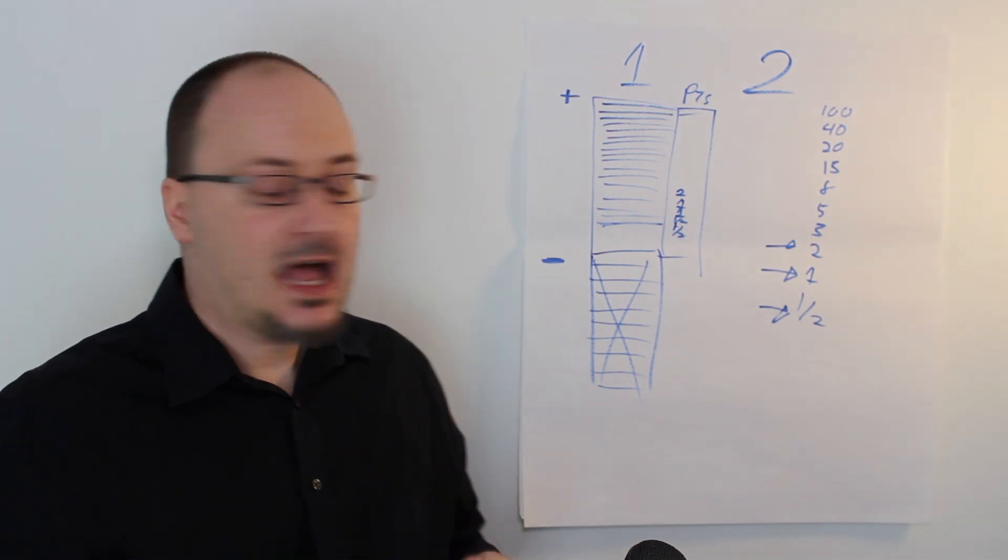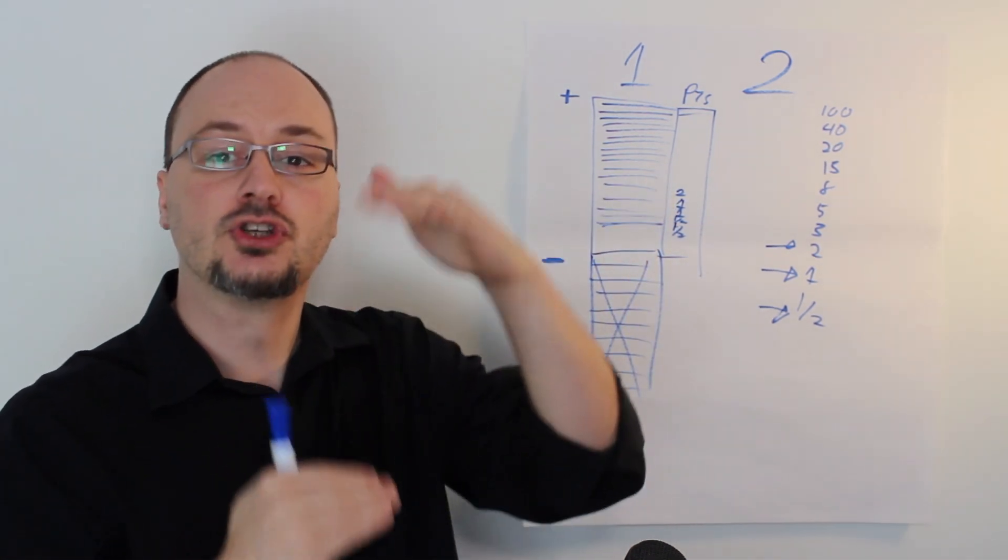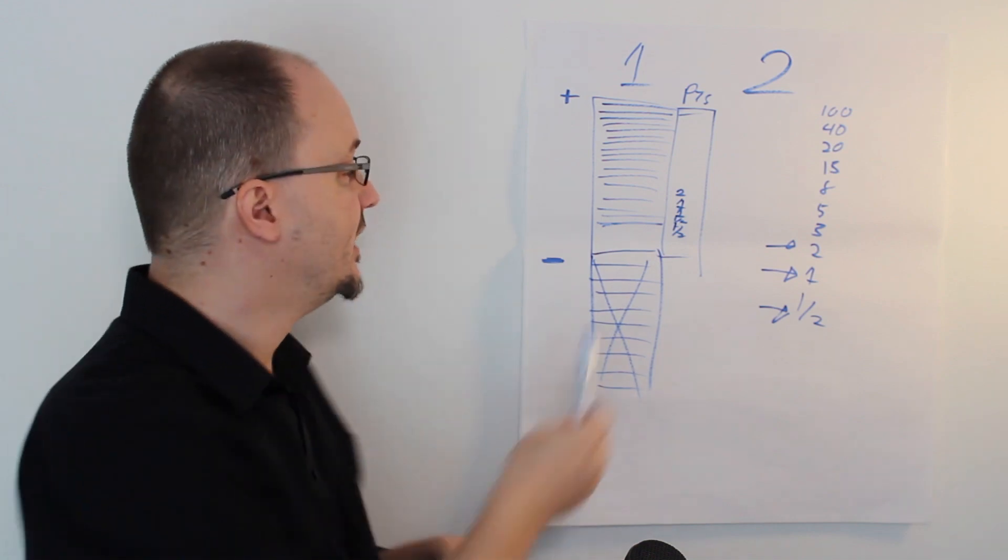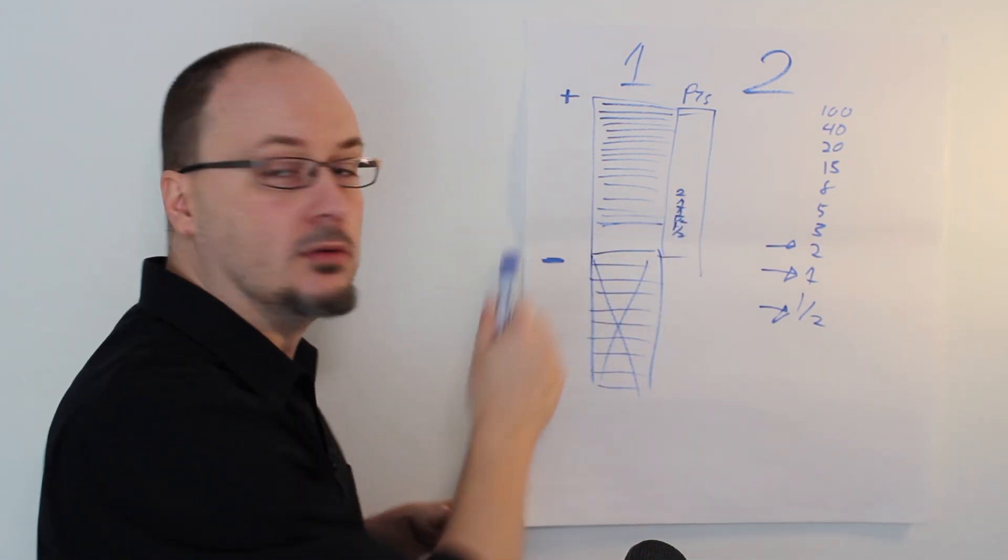One of the things that's going to happen is that you're probably going to have like long strings of the same number. Let's say I have like six twos in a row.